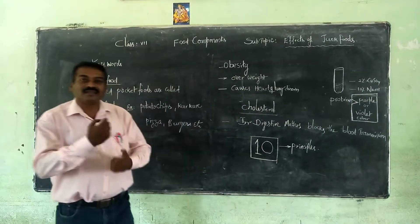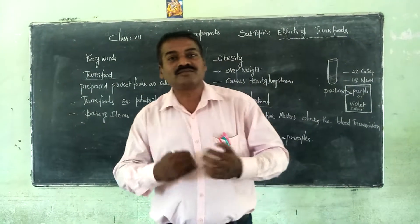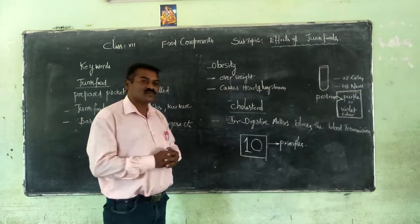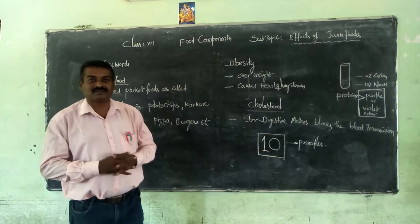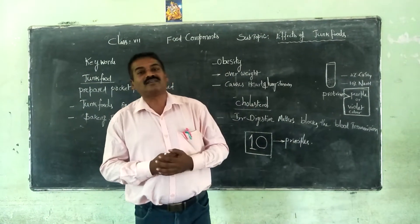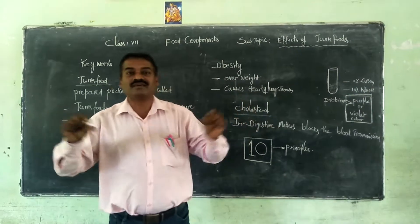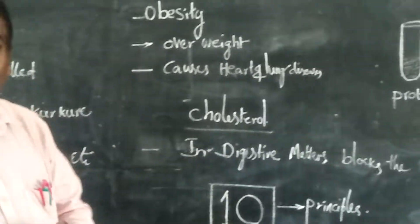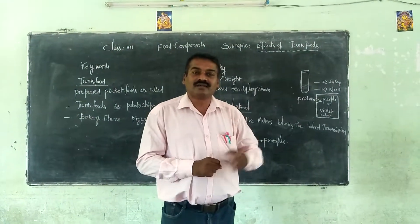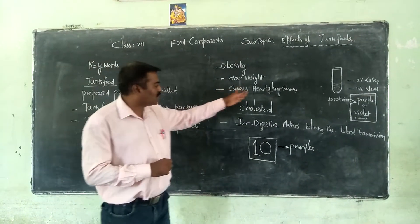By taking junk food, sometimes you cannot recognize when you have had enough, so you tend to take more quantity. This causes obesity, which is nothing but overweight. Some food items contain unsaturated fats which are converted into cholesterol. This affects the digestive system — digestion cannot work properly, and cholesterol precipitates and builds up in the digestive canal tract like a scrap, causing many diseases.